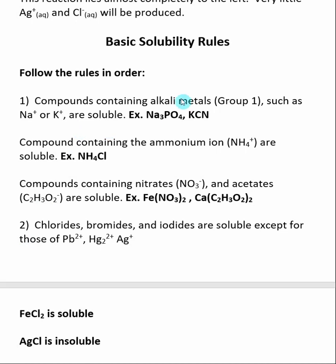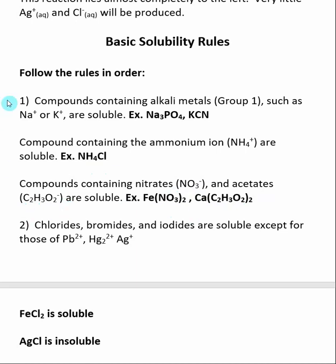Rule 1 says that compounds containing alkali metals (Group 1, all the way to the left in the periodic table), such as Na⁺ and K⁺, are soluble. A salt involving a Group 1 metal — like sodium phosphate or potassium cyanide — is expected to be soluble in water. Another part of Rule 1 is that ionic compounds using the ammonium ion, NH₄⁺, are also expected to be soluble; for example, ammonium chloride is soluble. Lastly, compounds containing nitrates (NO₃⁻) and acetates (C₂H₃O₂⁻) are considered soluble — for example, iron(II) nitrate and calcium acetate are expected to be soluble in water.